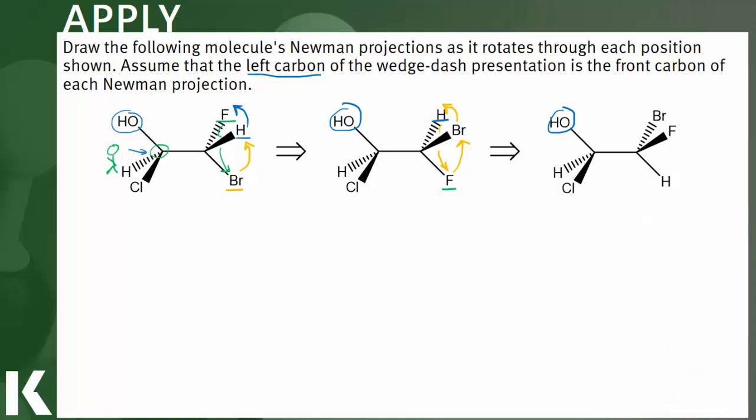Now I don't want to rely on that 3D model because of course we're not always going to have 3D models hanging around to help us out. But this should go pretty quick because we know that for each of these we're going to have that front carbon. For each one of these, the substituents bound to the front carbon are going to be exactly the same because in this example the front carbon is not the one rotating.